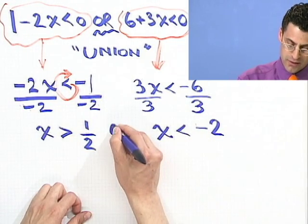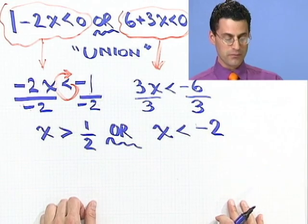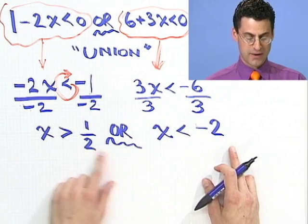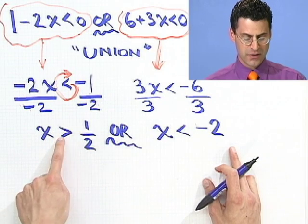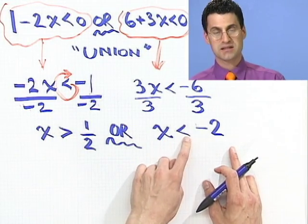So in this case, I see that x is still less than, and minus 6 divided by 3 is negative 2. And remember, the conjunction is or. So now I see what my answer is. It's either x is greater than a half or x is less than negative 2.